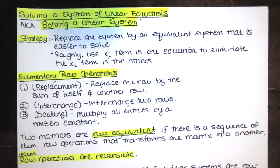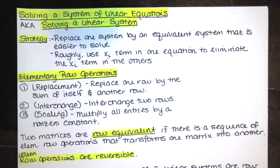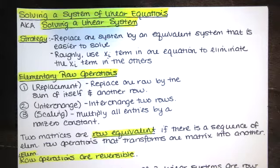When solving a linear system, the strategy is to replace the system with an equivalent system that is easier to solve. We use the Xᵢ term in one equation to eliminate Xᵢ terms in the others. So we use X terms to eliminate X terms, Y terms to eliminate Y terms, Z terms to eliminate Z terms, and so on. In general, we use Xᵢ terms to eliminate Xᵢ in the other equations.